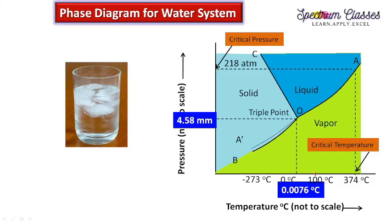To summarize the water system: OA is the vaporization curve up to the critical temperature (374°C, 218 atm); OB is the sublimation curve down to absolute zero; OC is the melting point curve with a negative slope; OA' is the metastable curve for supercooled liquid; and O is the triple point. This is how you can explain the water system for your exam as a long question. I hope you understand this water phase diagram. If you like this video, please subscribe and share it with your friends. Thank you for watching.